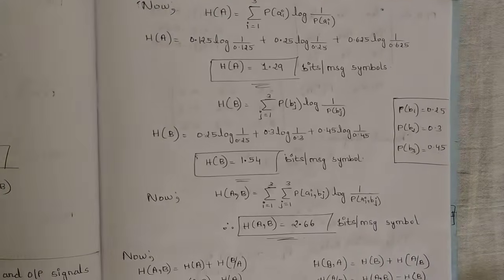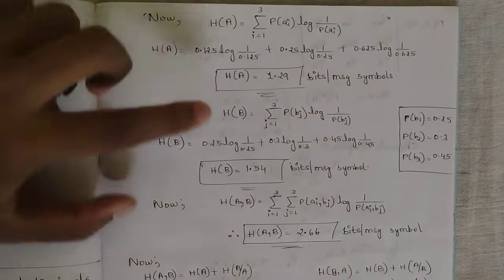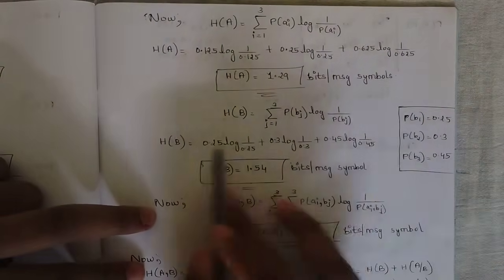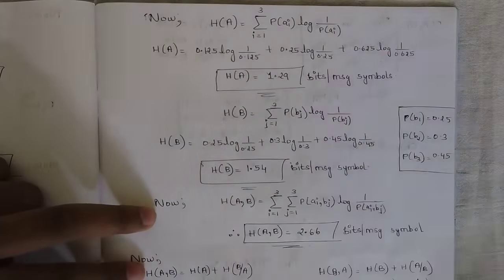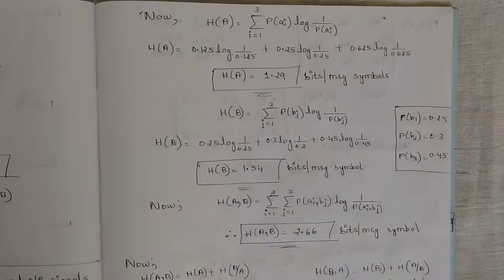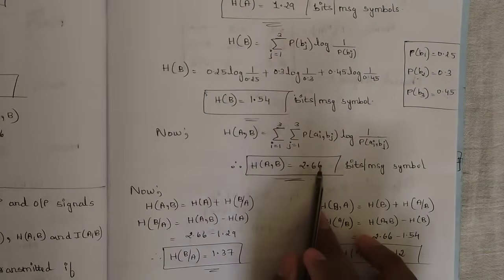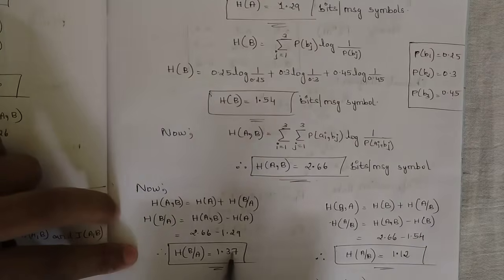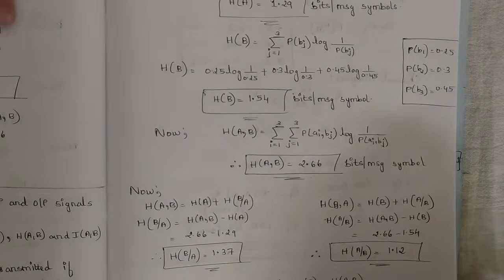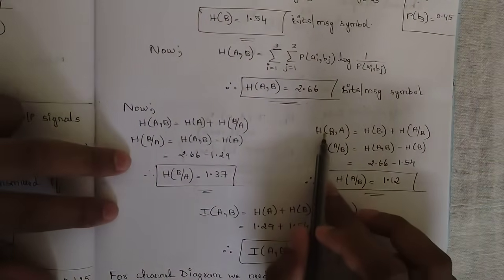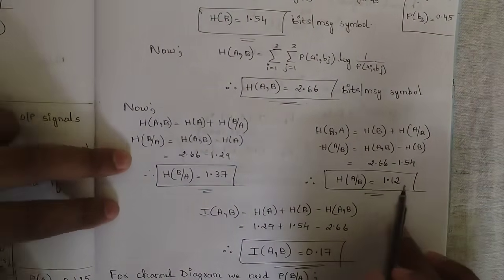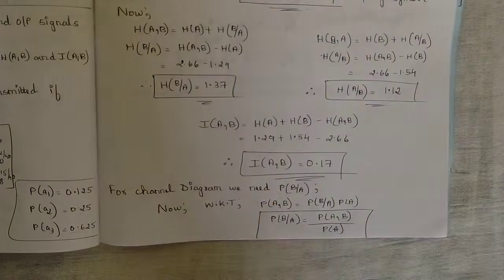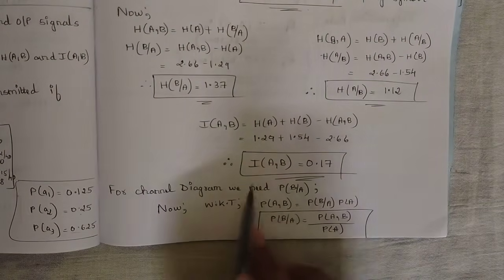Using these probabilities, calculate the entropy values: H(A) = 1.29 bits, H(B) = 1.54 bits, H(A,B) = 2.66 bits per message symbol, H(B|A) = 1.37 bits, H(A|B) = 1.12 bits, and the mutual information I(A,B) = 0.17 bits. Please pause the video and verify these values.